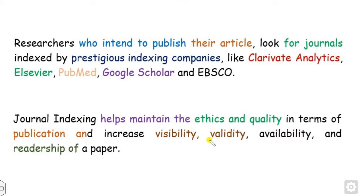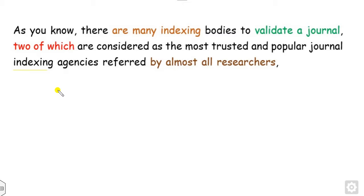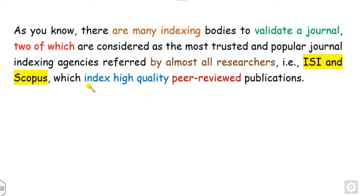As you know, there are many indexing bodies that validate journals, but out of them there are two major ones which are called ISI and Scopus, which represent high quality publications.